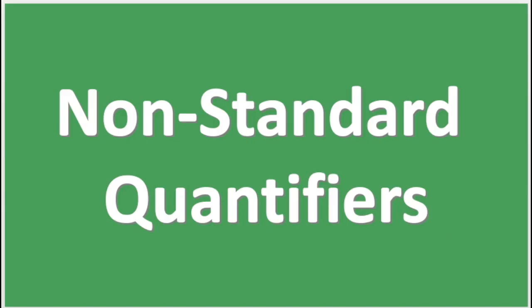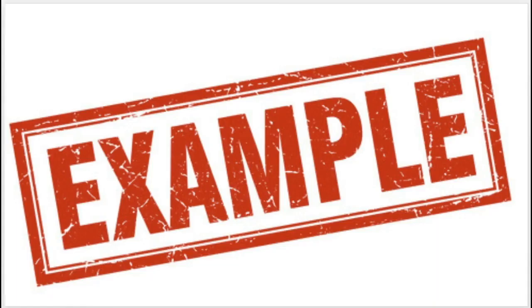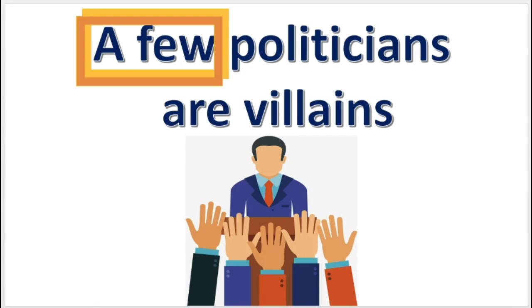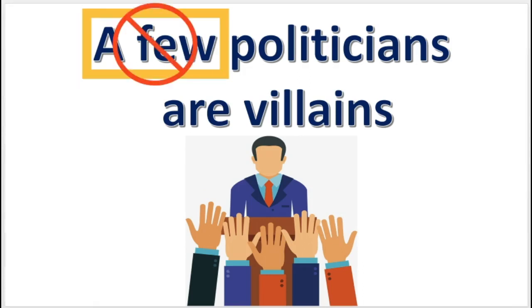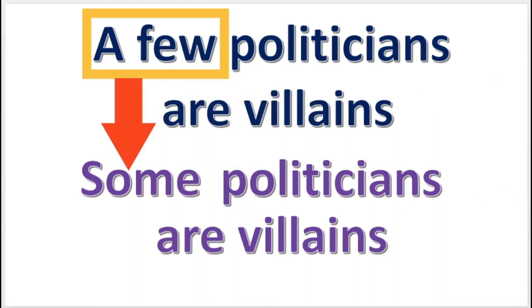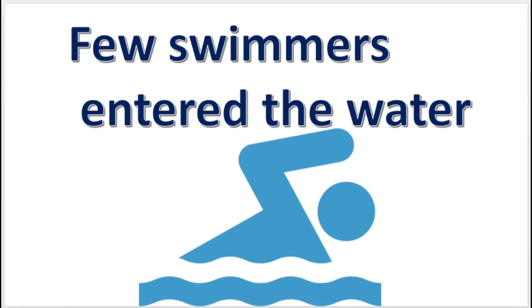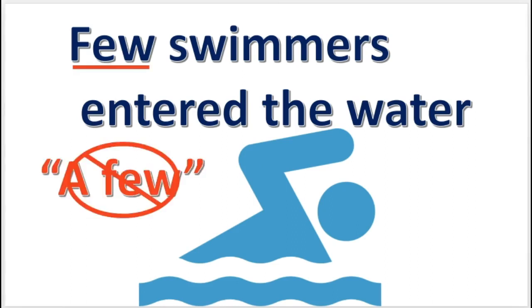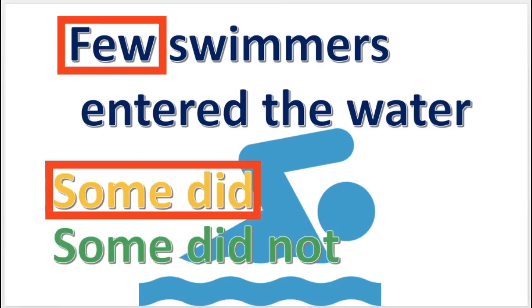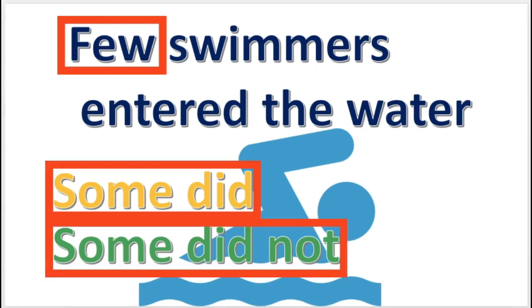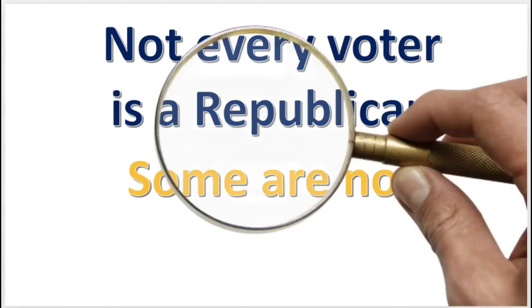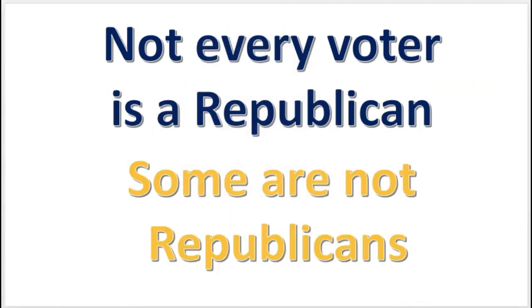The next topic is for statements that do not have a proper quantifier. For example, in 'a few politicians are villains,' the phrase 'a few' is a quantifier but not a standard one. 'A few' means 'some,' so the correct translation would be 'some politicians are villains.' Note that 'few' does not mean the same as 'a few' — 'few' means some did and some did not, so two categorical propositions are needed. Also, 'not every' means 'some are not,' so 'not every voter is a Republican' translates to 'some voters are not Republicans.'